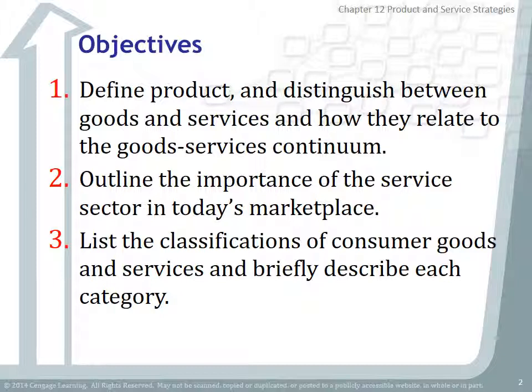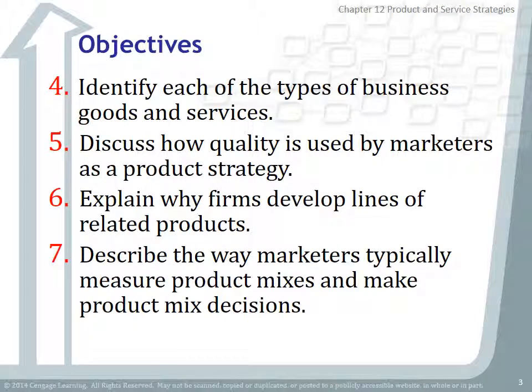Those objectives are: 1. Define product and distinguish between goods and services and how they relate to the goods-services continuum. 2. Outline the importance of the service sector in today's marketplace. 3. List the classifications of consumer goods and services and briefly describe each category. 4. Identify each of the types of business goods and services.